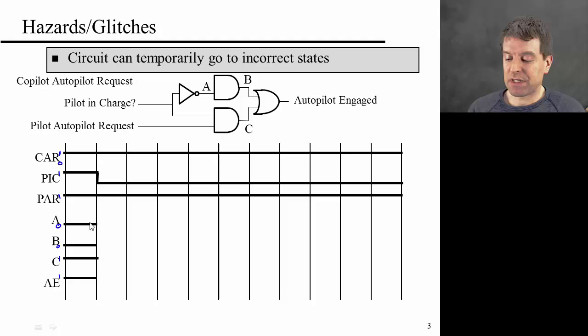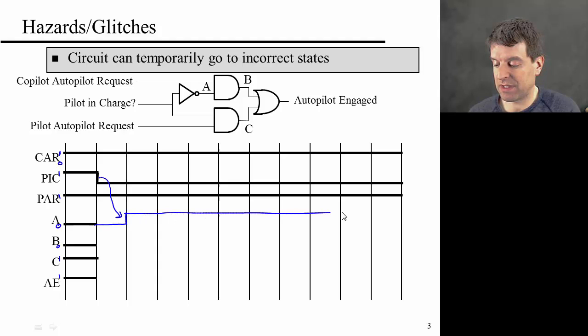So here I'm saying A starts high. What is A? A is just the inverse of pilot in charge. So at some point here, the pilot decides to leave the cockpit. And so with one gate delay, because of this not gate, A will go up. And nothing else changes going forward. So we just have this. Now B is what? B is the AND of this signal A and the copilot's autopilot request. So in this case, the copilot has already switched to autopilot. And so B, being the AND of A and CAR, will follow A with one gate delay. So it's going to go up once both A and CAR are one.